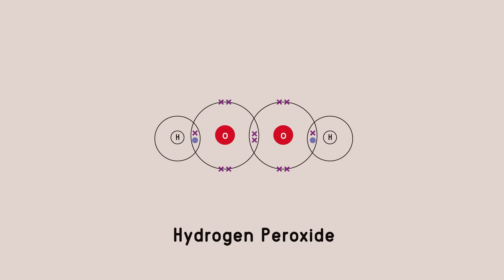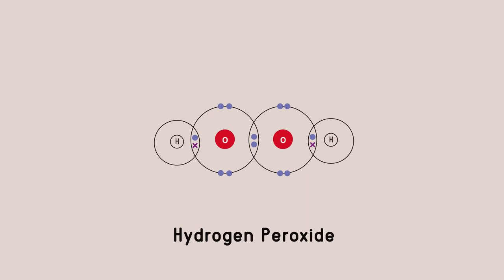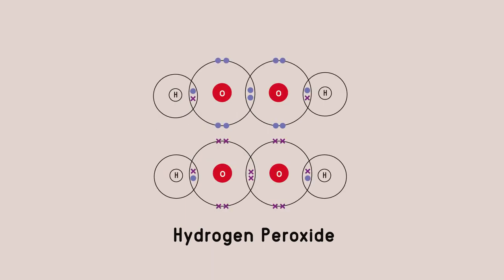Have you got it? There are two ways you could draw the dot and cross diagram of hydrogen peroxide. The first hydrogen could be dots, the first oxygen crosses, the next oxygen dots and the final hydrogen crosses, or the other way around. This is the same as turning the molecule round, so there is really only one way to draw the dot and cross diagram.